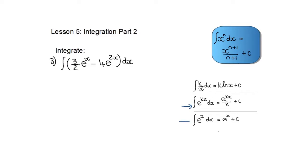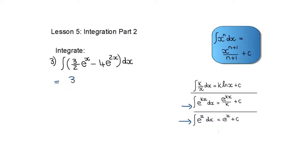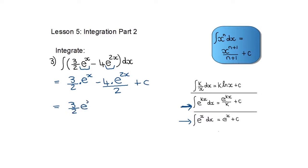In the next example I have two terms. The integral of e to the power x is just e to the power x. Then minus: with e to the power 2x I use the rule again — e to the power 2x divided by the k, which is 2. Remember to add the constant. Simplified: 3 over 2 e to the power x, and the 2 divides into 4 twice, giving minus 2e to the power 2x, plus the constant.